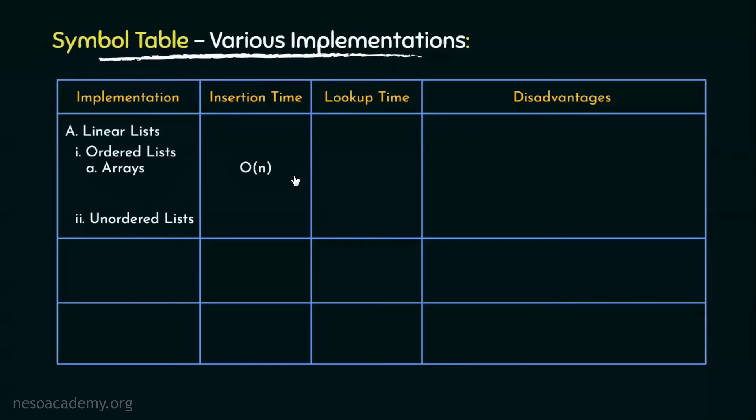Now since it is ordered, we can perform binary search which takes order of log n time to find out the position. Thereafter, we will have to shift the elements towards the right in order to make space for the new element, which may take order of n time. Finally, the element can be inserted in the list in constant time. Therefore, the time taken for insertion would be order of log n plus n plus constant time. And since n is the leading term in here, therefore the insertion time would be order of n. Now, as we can perform binary search on the ordered lists which are implemented using arrays, therefore the lookup time would be order of log n.